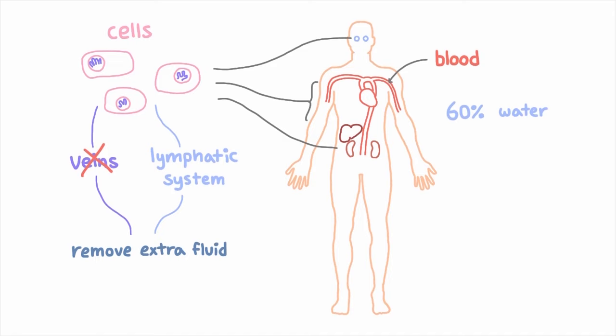But if there's impairment to either of these systems, fluid can build up in this extracellular space. And in particular, if you have impairment to your lymphatic system, the excessive fluid that builds up leads to chronic swelling known as lymphedema.